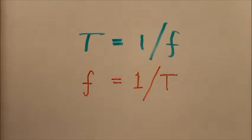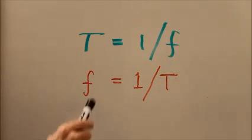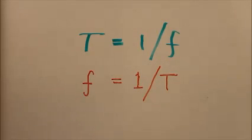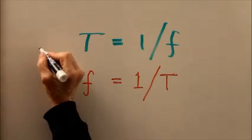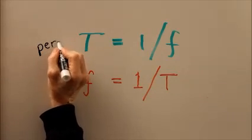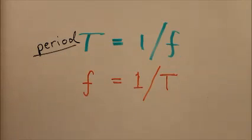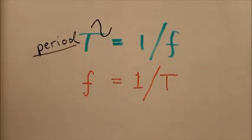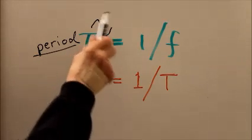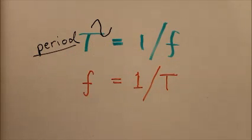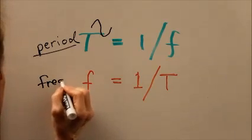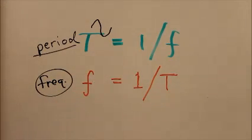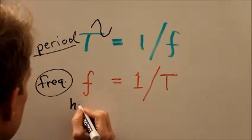Conversely, the frequency f in Hertz is equal to the reciprocal of the period T in seconds. Period is the length of time it takes for one cycle of a wave to complete itself. Frequency is the number of wave cycles that occur per second. The standard unit of frequency is the Hertz.